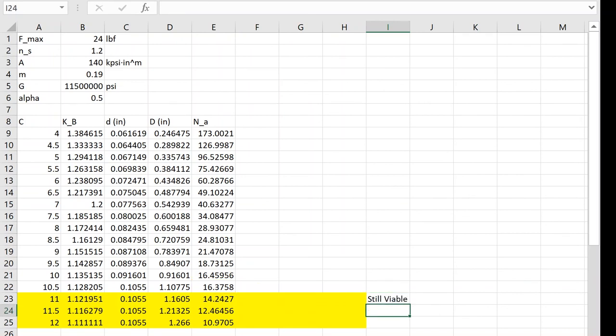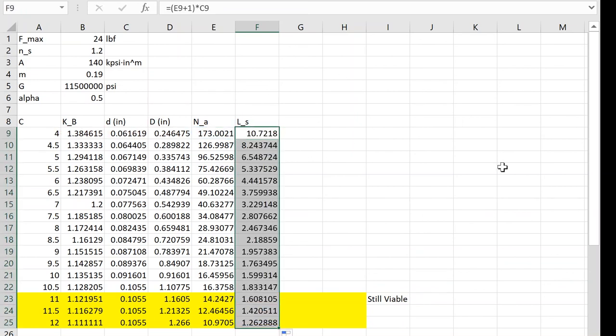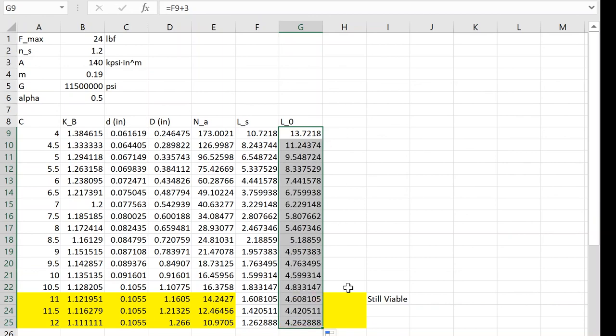And the last thing I need to do is check for buckling. For this, I calculate the solid length, which for a plain end spring, like this one, would be the number of active coils or total coils, in this case it doesn't matter, plus 1 times the diameter of the wire. Because I previously calculated the maximum deflection at 3 inches, the free length would be the solid length plus 3.